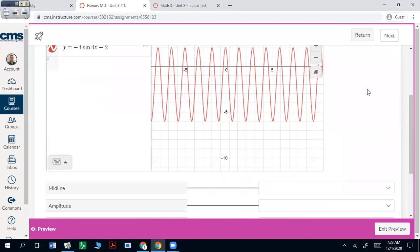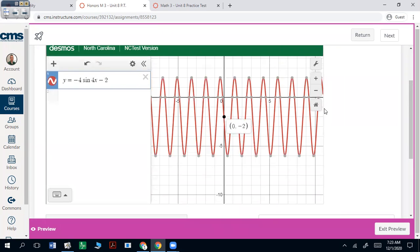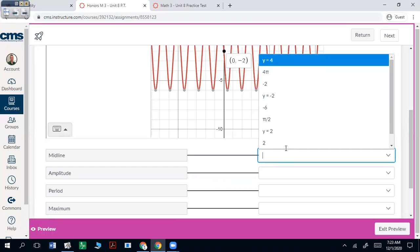And we want to know midline. Midline is where it starts in the sine, so it's going to be negative 2. y equals negative 2. That's important. Don't click negative 2. Click y equals negative 2.